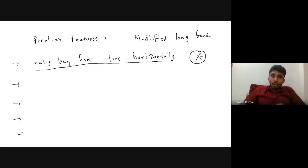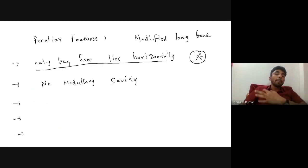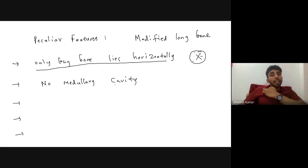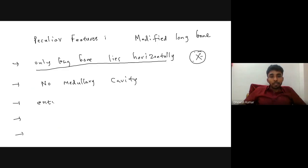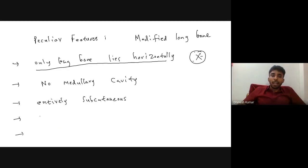The clavicle bone has no medullary cavity. Another peculiar feature is that the entire length of the clavicle bone is subcutaneous — you can easily palpate the entire length of the clavicle bone.